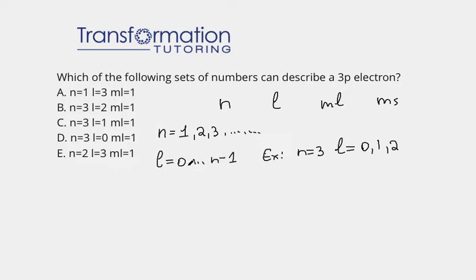These are the possible values of L, 0 to N minus 1. The third quantum number is ML, and ML depends on L. It goes from minus L to 0 to plus L.